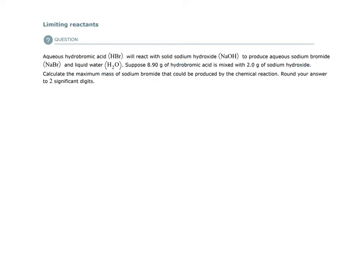This time we have aqueous hydrobromic acid reacting with solid sodium hydroxide to produce aqueous sodium bromide and liquid water. They give us the chemical formula for each of these substances, so let's go ahead and build the chemical equation and balance it. So we have hydrobromic acid, HBr aqueous, reacting with solid sodium hydroxide, and this produces aqueous sodium bromide.